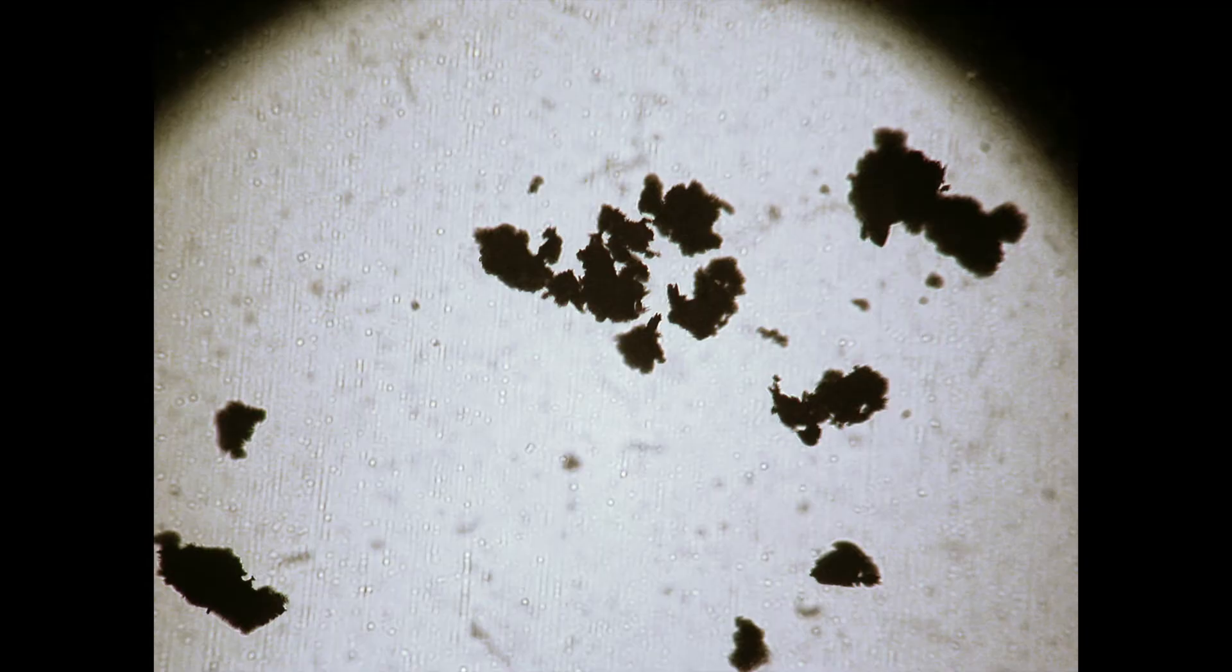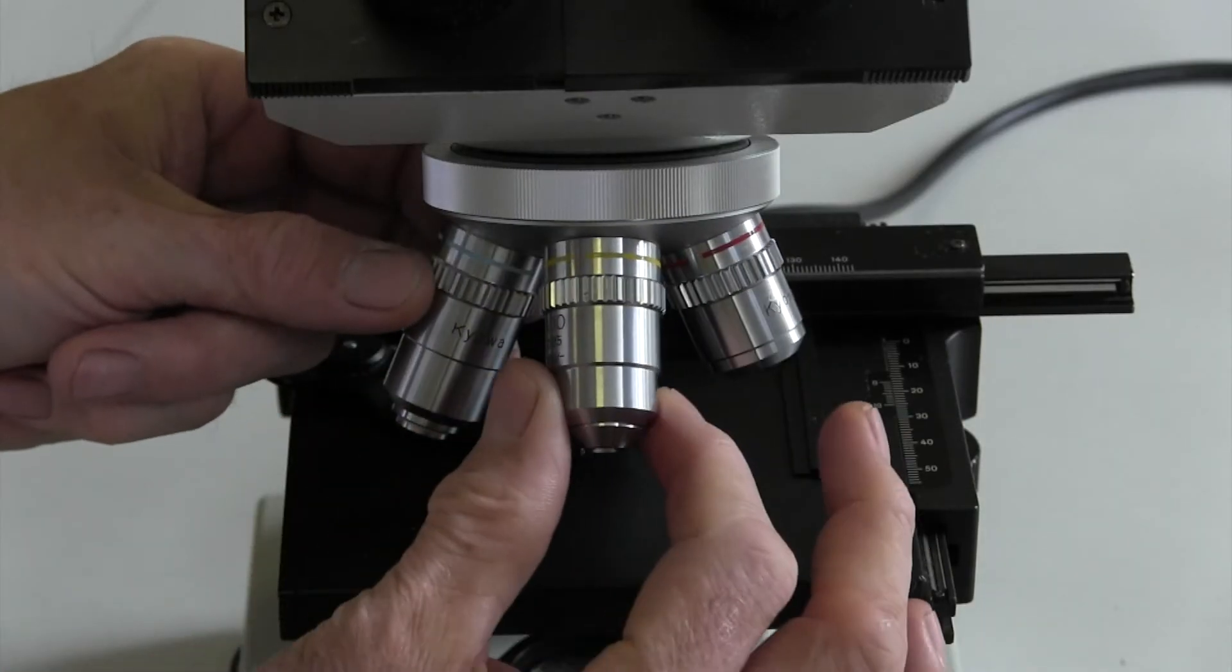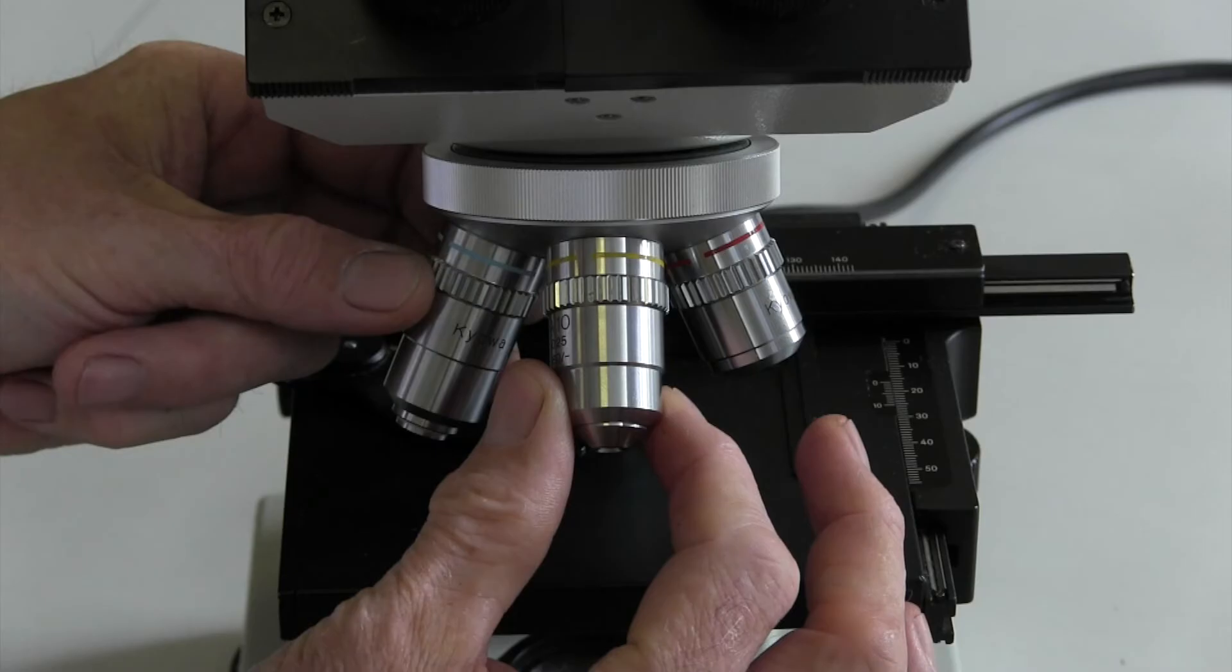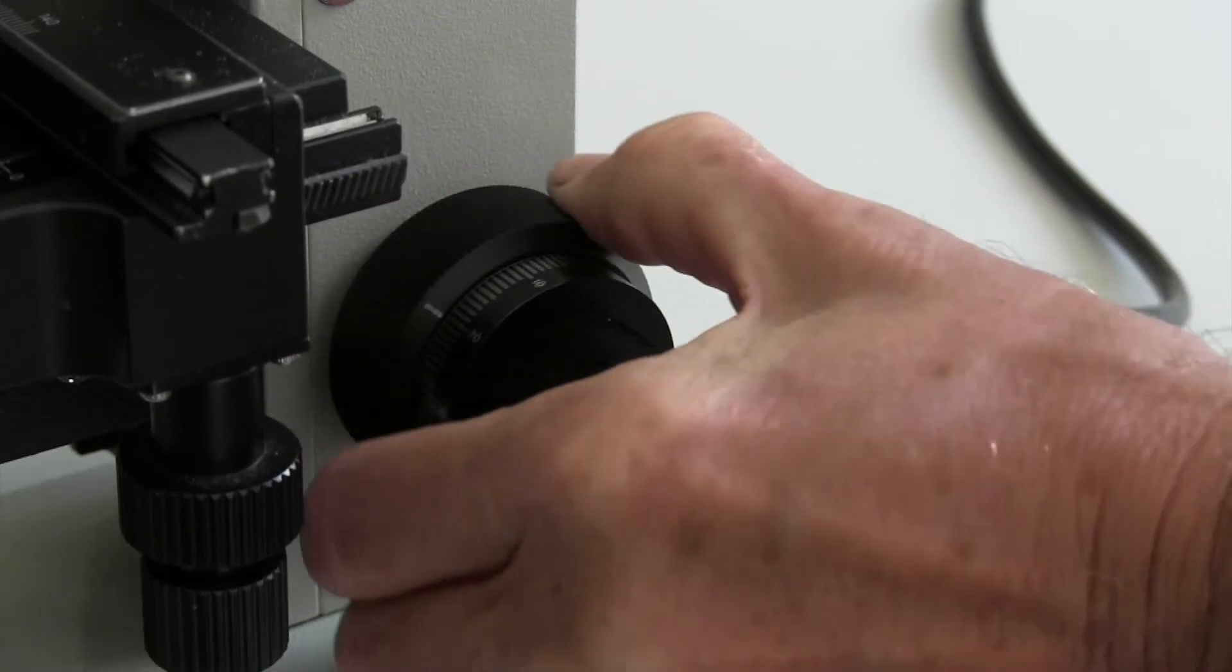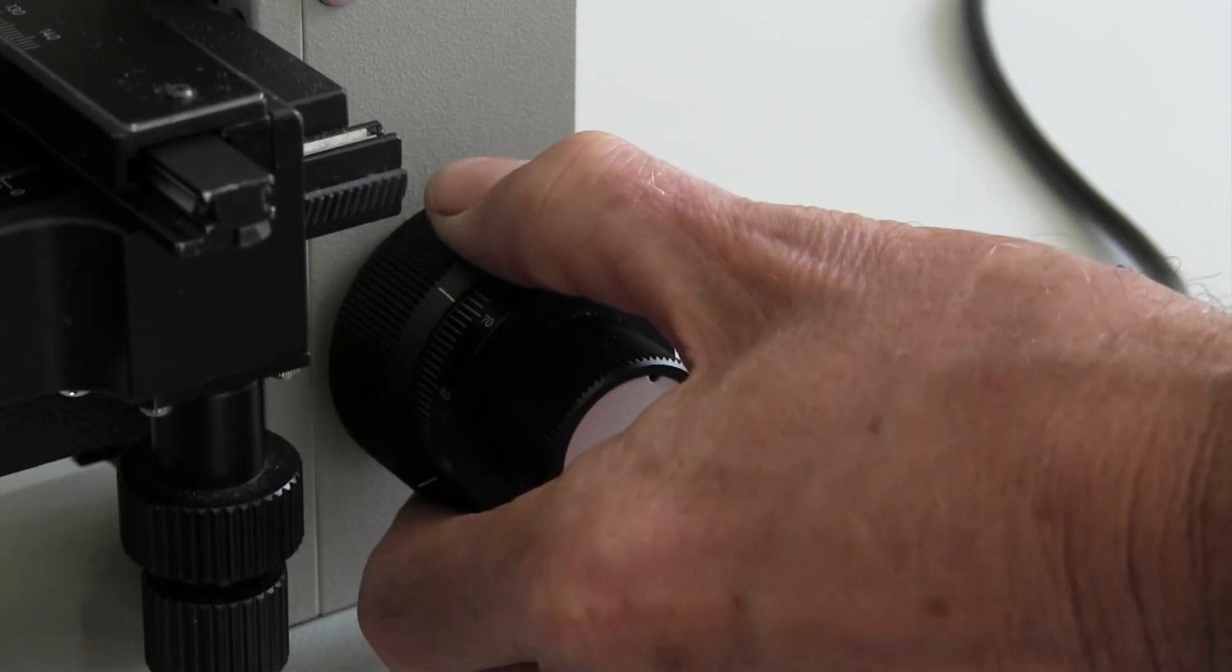Although whatever it is you have on the slide will be out of focus. For this exercise, make sure you have the 10x objective, that's the one with the yellow band, in position and use the coarse focus wheel to wind the stage down slightly to get better focus on your mark.